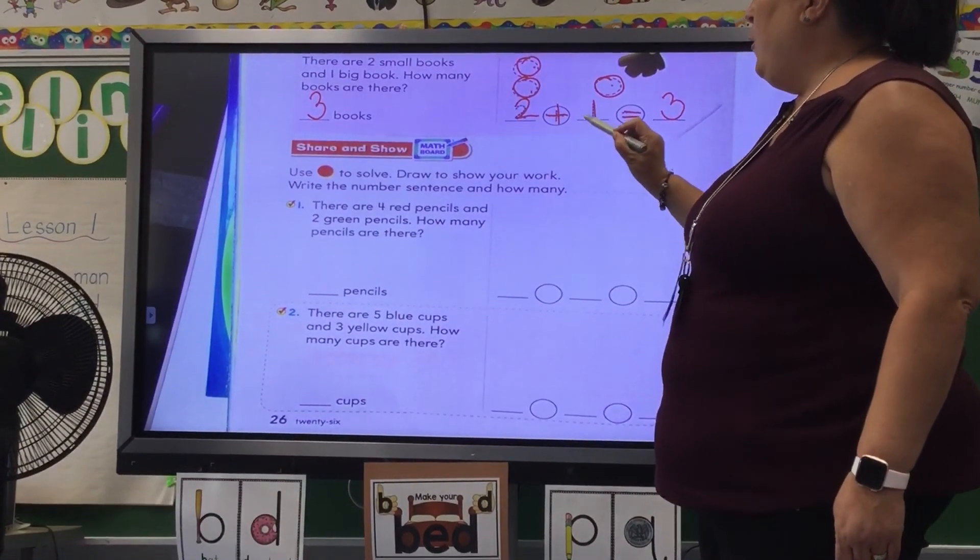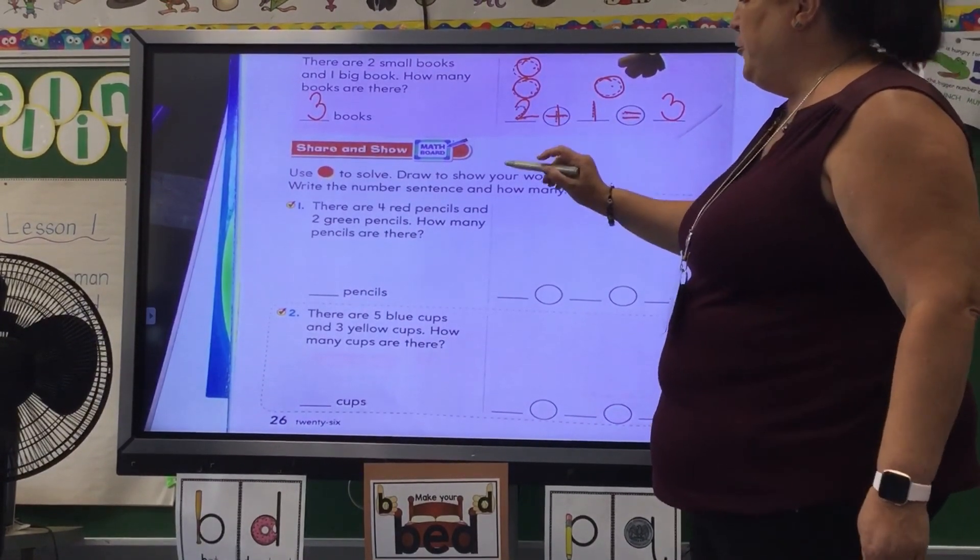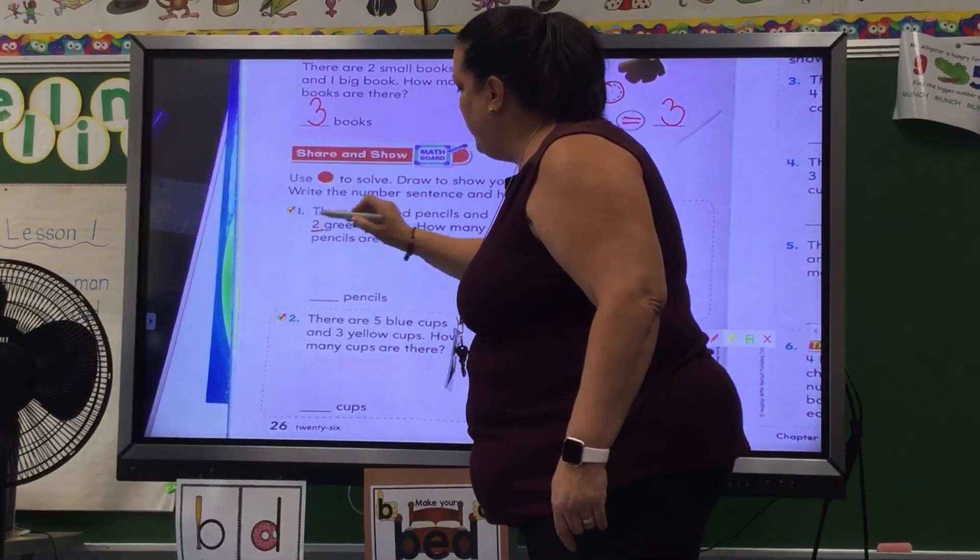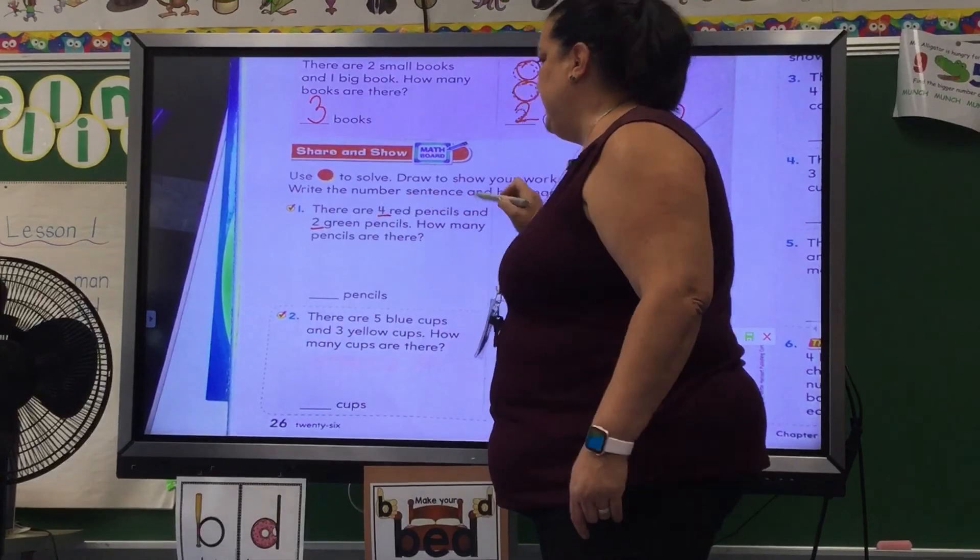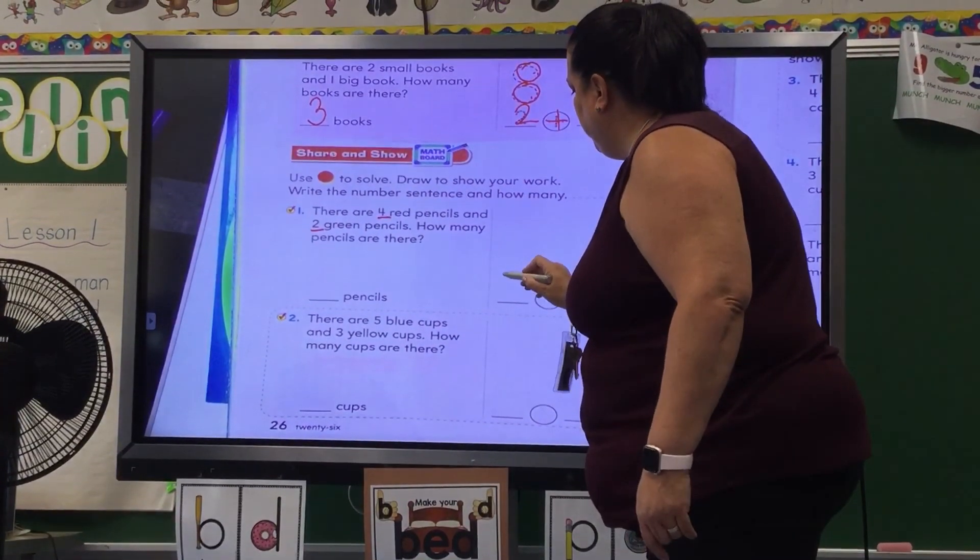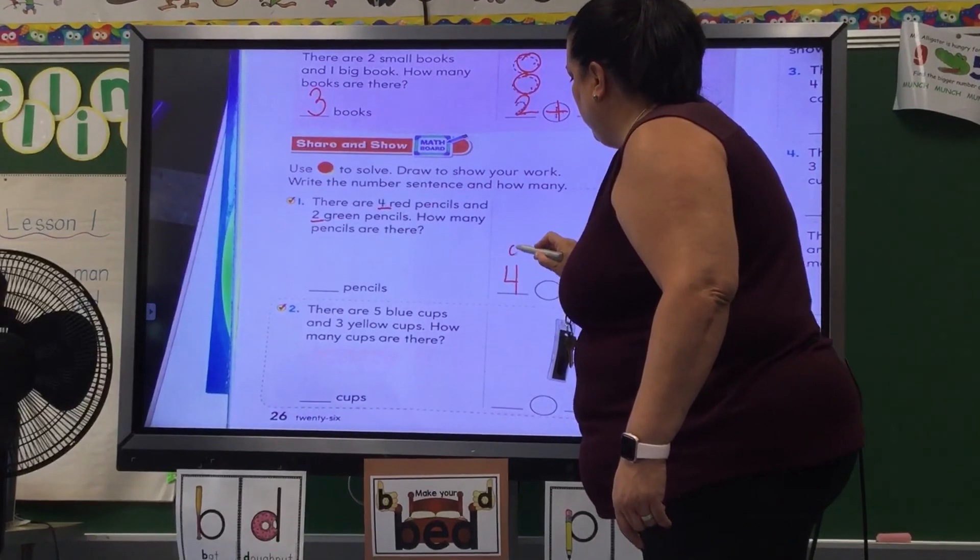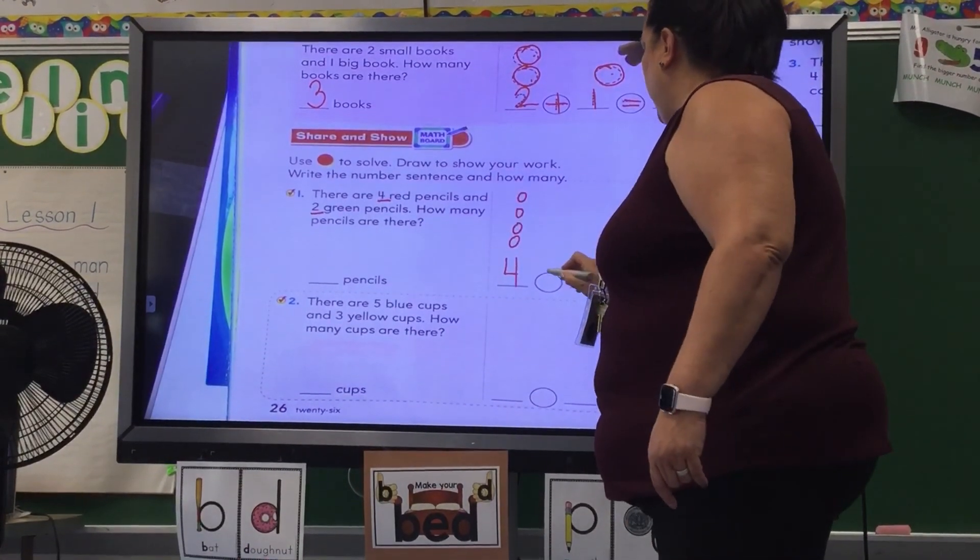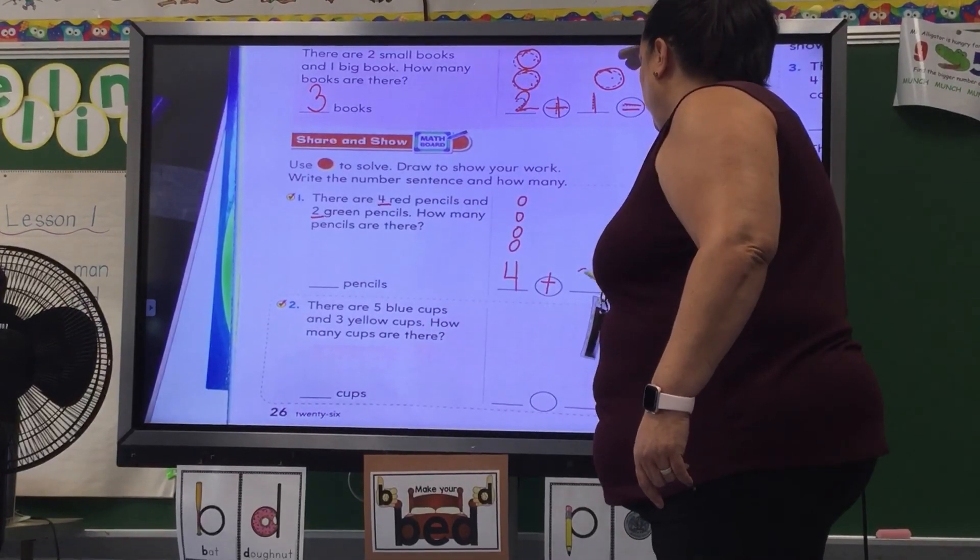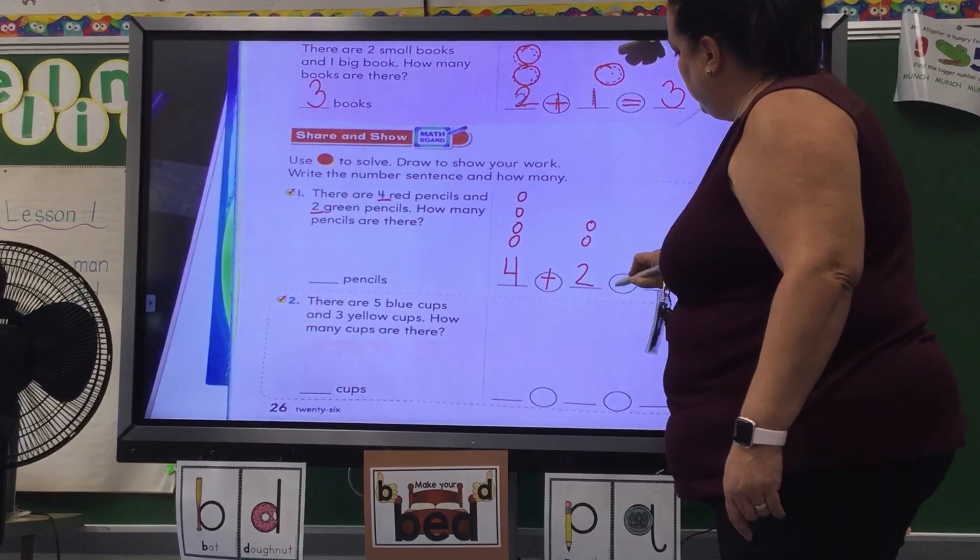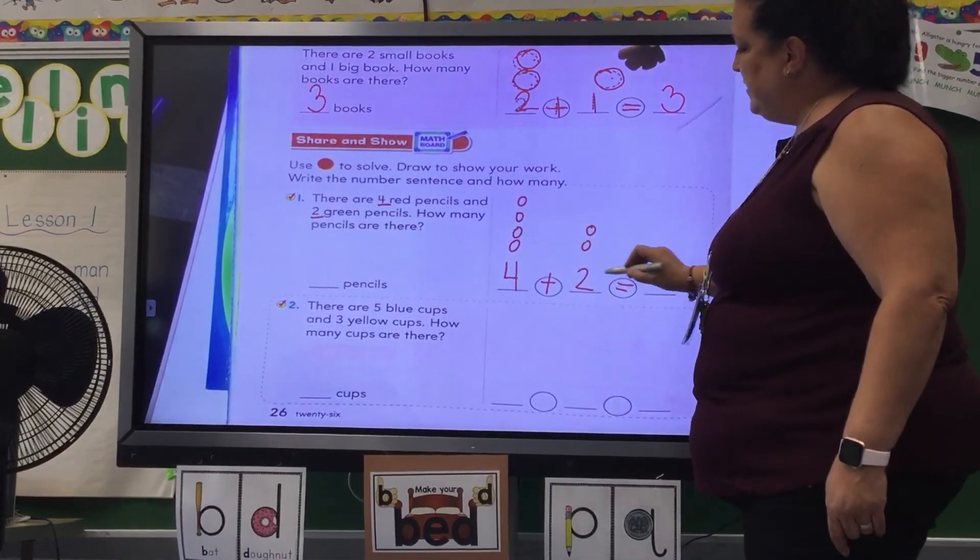There are four red pencils and two green pencils. Now I'm going to underline this so I remember what I'm going to do. Four red pencils and two green pencils. How many pencils are there? So the first number is four. You can draw little circles. One, two, three, four. Plus two green. One, two.